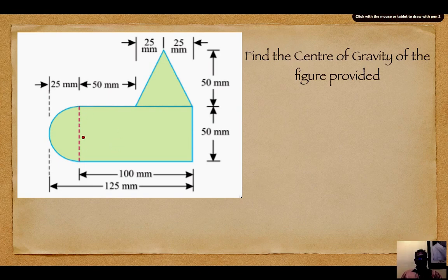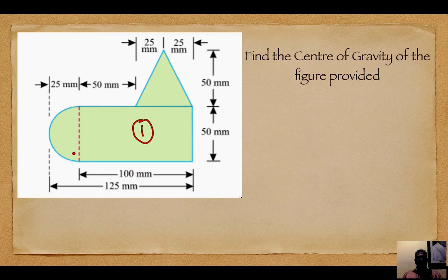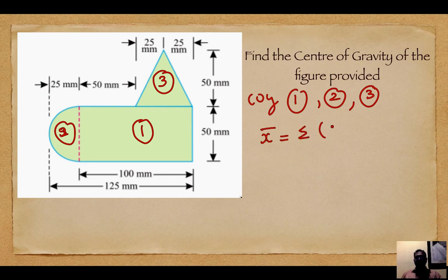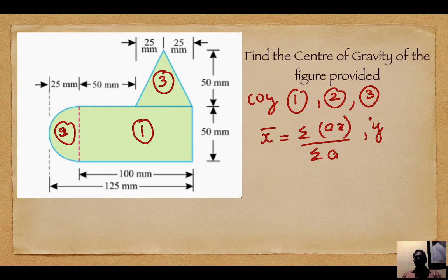The object is divided into three sections: a rectangular section (section 1), a semicircular section (section 2), and a triangular section (section 3). We find the center of gravity for each section, then x̄ is the algebraic sum of the product of each area and its respective centroid distance, divided by the algebraic sum of the areas. The same formula applies for ȳ using the y-coordinate.